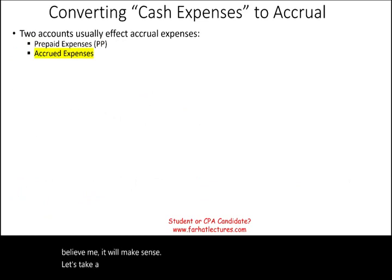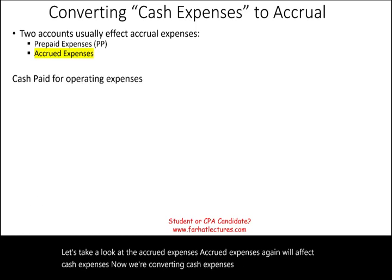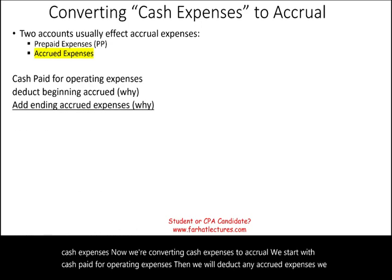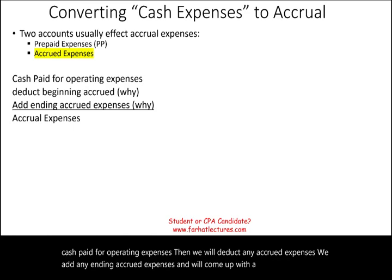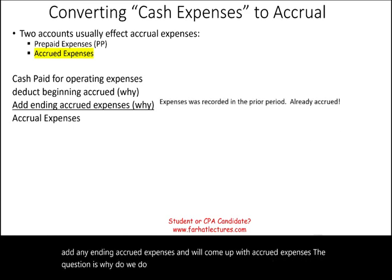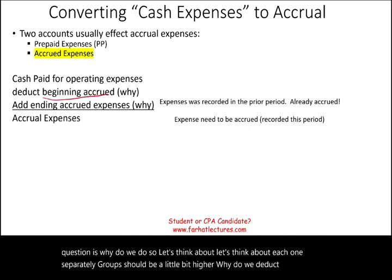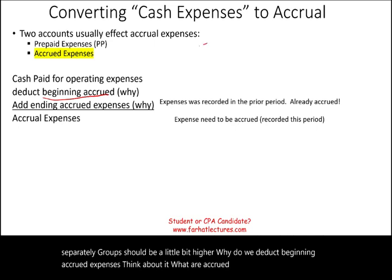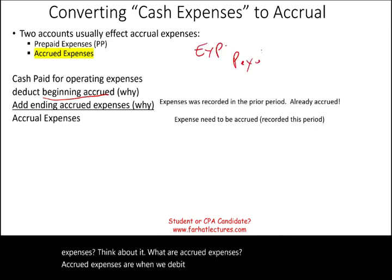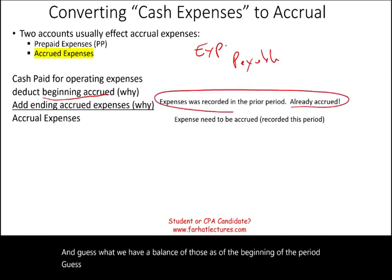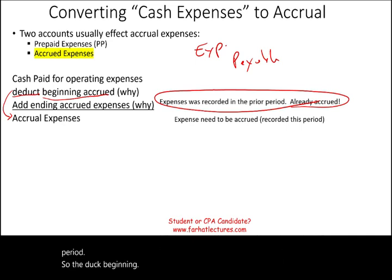Let's take a look at accrued expenses. Accrued expenses also affect cash expenses — we're converting cash expenses to accrual. We start with cash paid for operating expenses, then deduct beginning accrued expenses, and add ending accrued expenses to come up with accrual expenses. Why do we deduct beginning accrued expenses? Accrued expenses are when we debit an expense and credit a payable. If we have a balance at the beginning of the period, we already accrued that expense, so deduct it from this period.